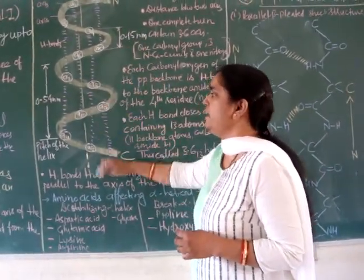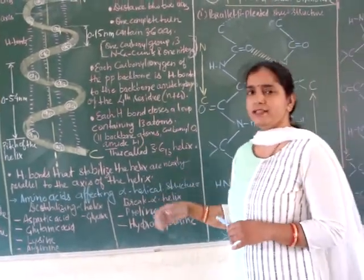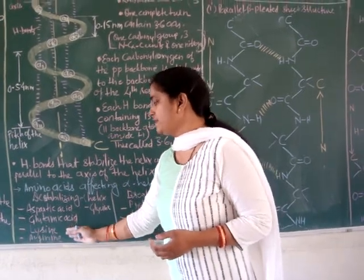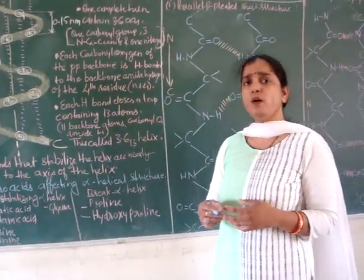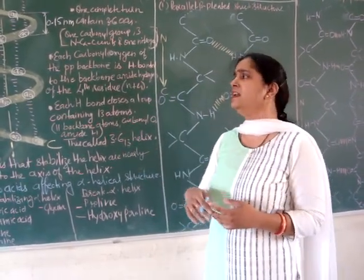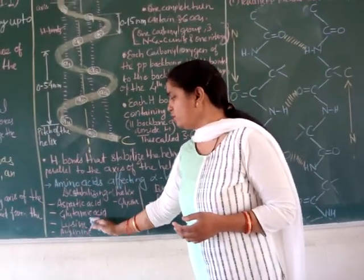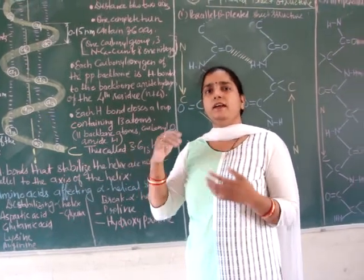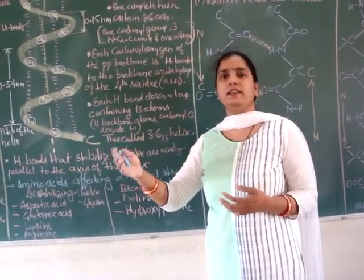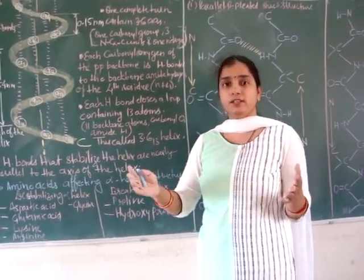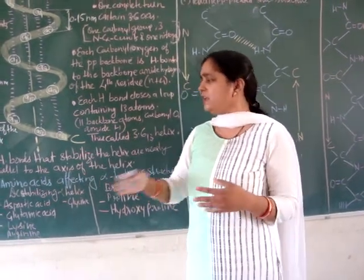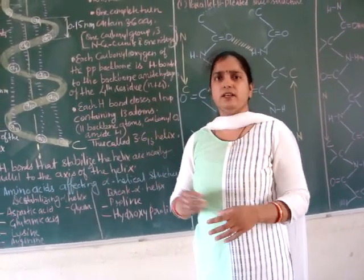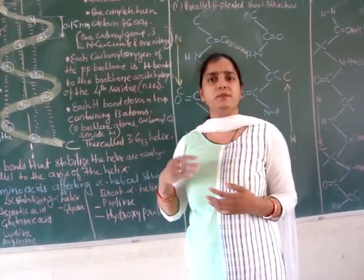These hydrogen bonds stabilize the helical structure. Some amino acids affect alpha helix stability: aspartic acid, glutamic acid, glycine, and arginine can destabilize it. Glycine, due to its small size, can rotate 360° around the carbon-carbon bond. Aspartic acid, glutamic acid, and arginine carry charges — if many same-charged amino acids occur in a continuous stretch, they repel each other and destabilize the helix. However, if oppositely charged amino acids are spaced appropriately, they can stabilize the structure.